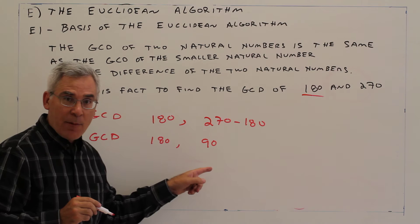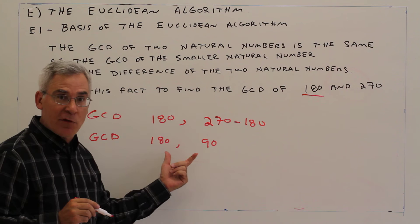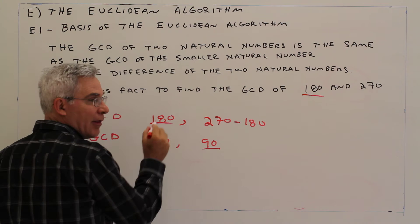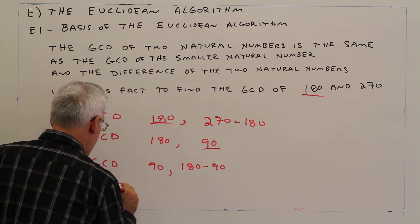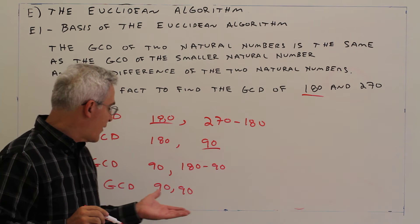And this is going to be the same as the GCD of the smaller number, 90, and their difference, which is also 90. So it's the same as the GCD of 90 and 180 minus 90, the GCD of 90 and 90.